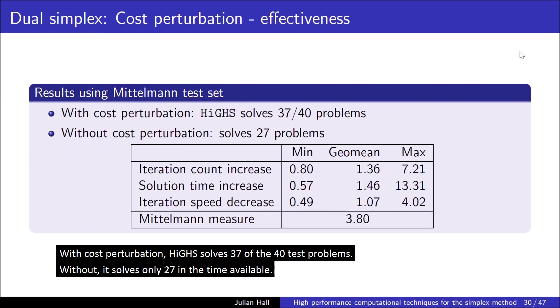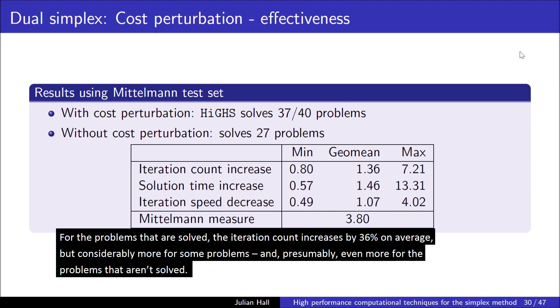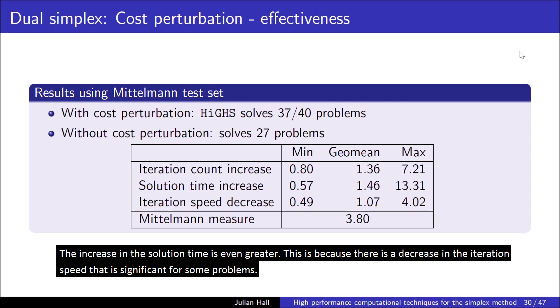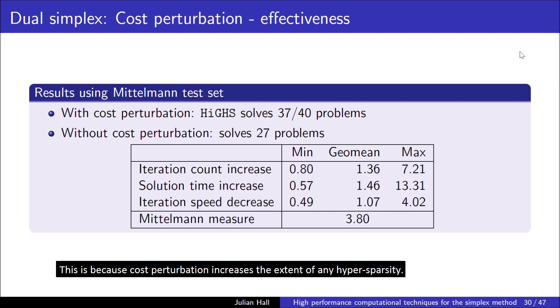With cost perturbation, HiGHS solves 37 of the 40 test problems. Without, it solves only 27 in the time available. For the problems that are solved, the iteration count increases by 36% on average, but by considerably more for some problems. And, presumably, even more for some of the problems that aren't solved. The increase in the solution time is even greater, because there is a decrease in the iteration speed that is significant for some problems. This is because cost perturbation increases the extent of any hypersparsity. Overall, the relative solution time measure is 3.8, reflecting the many problems not solved.